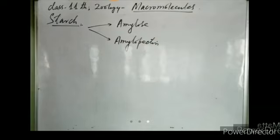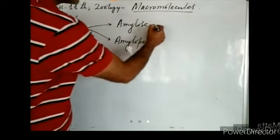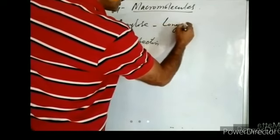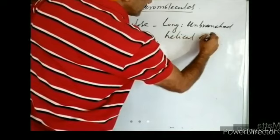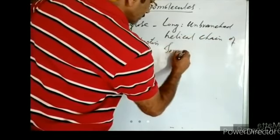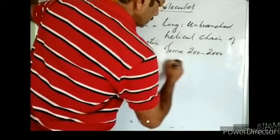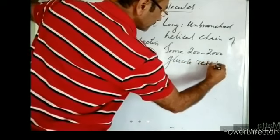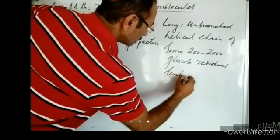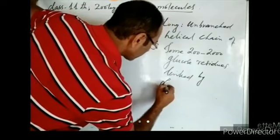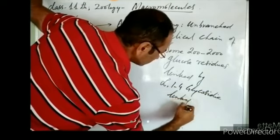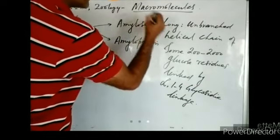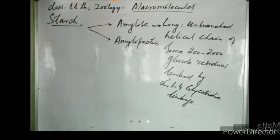First we will look at amylose. Amylose is a long, unbranched, helical chain of some 200 to 2,000 glucose residues, linked by alpha-1,4 glycosidic linkage. When many glucose units are linked together in the form of a chain, we call them glucose residues.